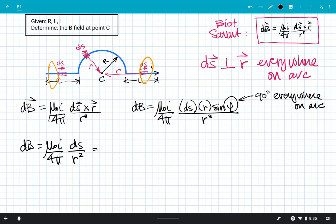For this, it's 90 degrees everywhere on the arc, so sine is 1. That makes dB equal to μ₀I over 4π, DS over R squared. In this particular case, my little r here is equal to a constant.